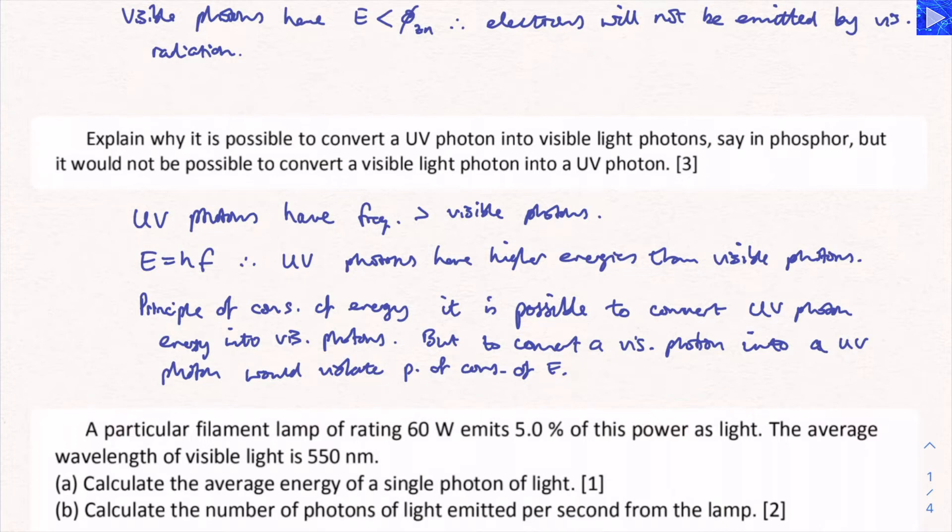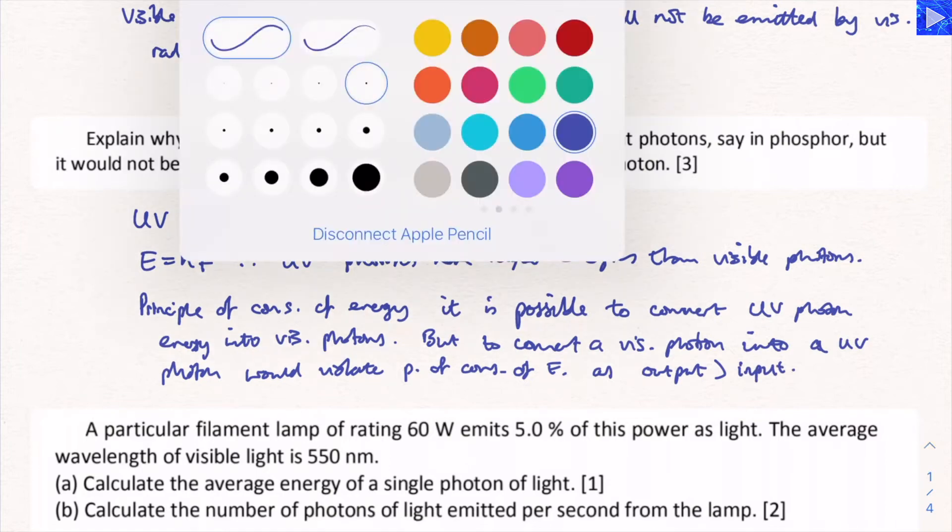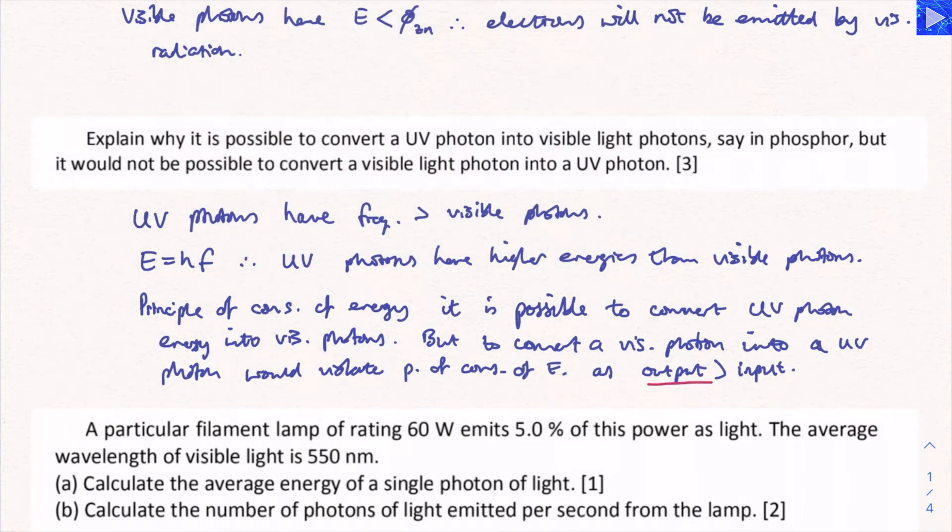Because you'd have a smaller input, you're getting a larger output than what you put in. Output would be larger than the input. That's the key idea to try and get across here. Output is larger than the input, so it's not possible. Those are the three points I would make there.